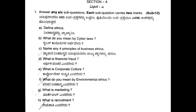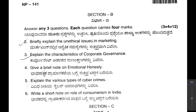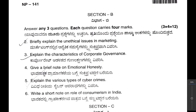Coming to Section B, they will give five questions and out of those five questions you need to answer any three. You will also get to know from which chapter they have asked. As mentioned, it is a theory paper, so only theory questions were asked.